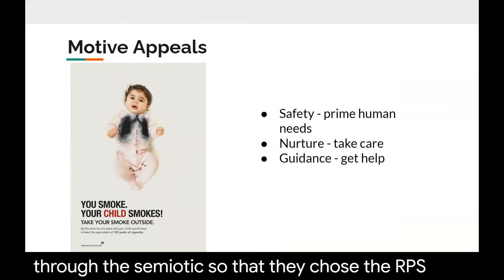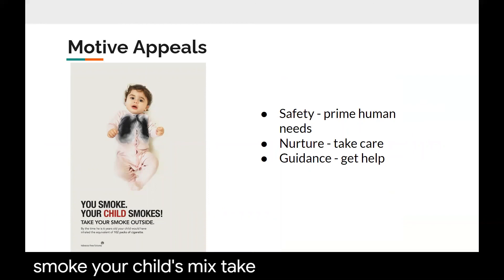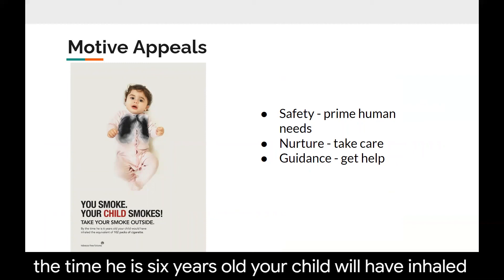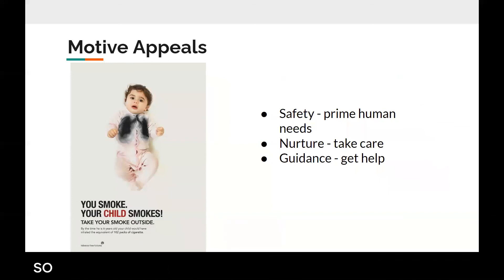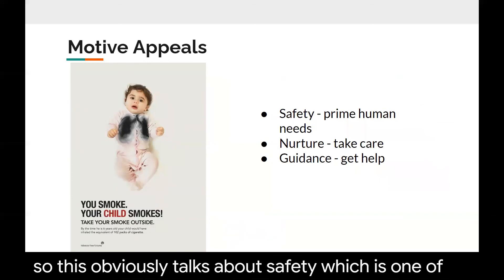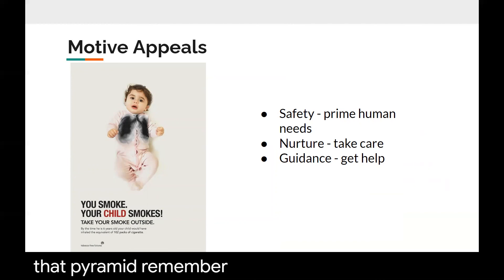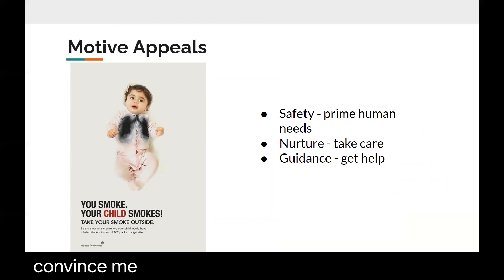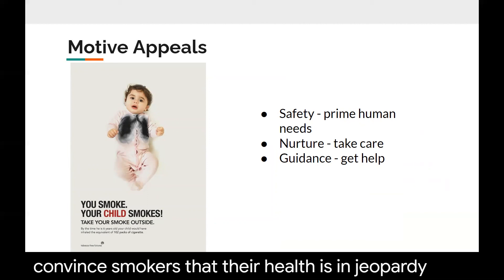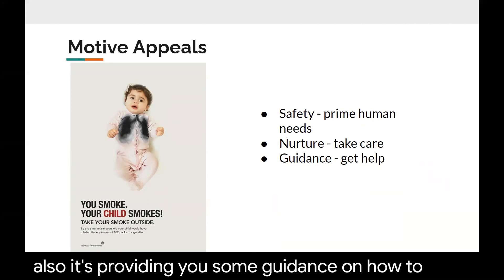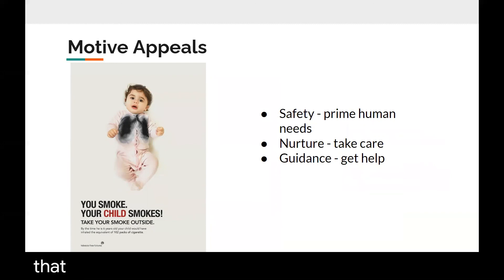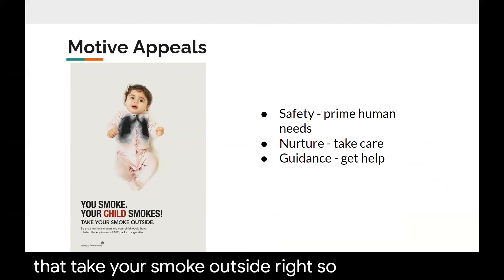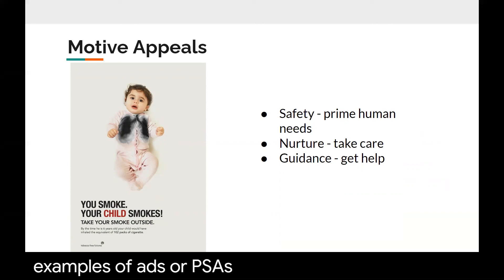What about this PSA? 'You smoke, your child smokes. Take your smoke outside. By the time he is six years old, your child will have inhaled the equivalent of 102 packs of cigarettes.' This obviously talks about safety, which is one of the prime human needs at the bottom of that pyramid. Nurturing — taking care of others — is also targeted here. By focusing not on your smoking habit and how it affects your health, but on how it affects your kids, this tends to be a lot more persuasive than trying to convince smokers that their own health is in jeopardy. It's also providing guidance — offering a suggestion of how to prevent that: take your smoke outside.